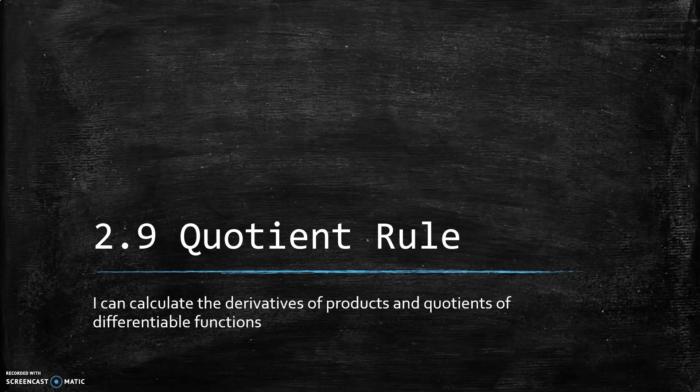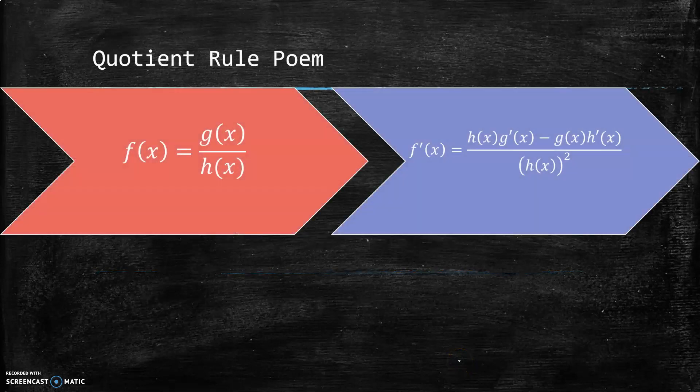Section 2.9 is about the quotient rule. This is a way of figuring out the derivative if your function is a quotient of two other functions. Like the product rule, it's more complicated than just taking the derivative of the numerator and the denominator separately.